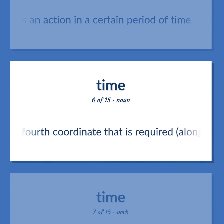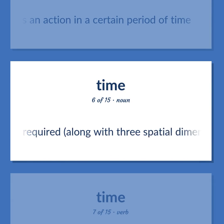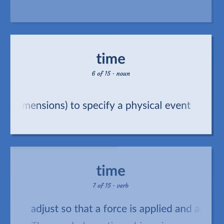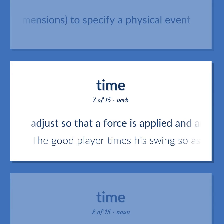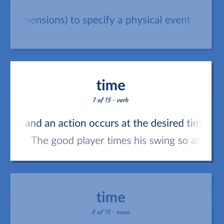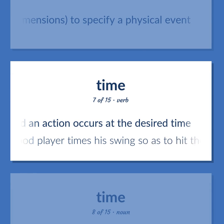TIME: The fourth coordinate that is required, along with three spatial dimensions, to specify a physical event. Adjust so that a force is applied and an action occurs at the desired time. The good player times his swing so as to hit the ball squarely.